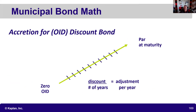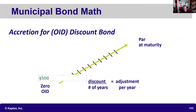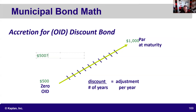Here's an example someone reached out about on social media. They bought a municipal OID — some Georgia county or Columbus, Ohio bond — for $500, and it had 10 years to maturity. You're going to get back $1,000, so you're making $500 over 10 years. We adjust the cost basis up each year by $50: year one is $550, year two is $600, and so on. Remember, the only part of a muni bond that is tax-free is the coupon, so if you sell for more than your adjusted cost basis, that's a capital gain.